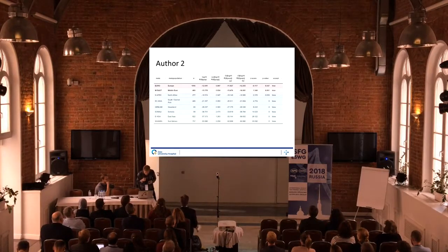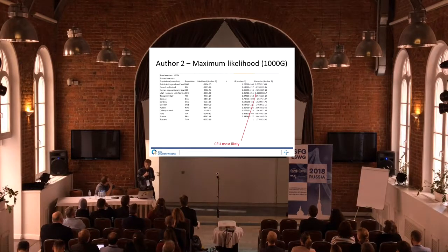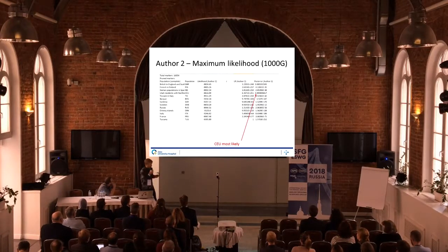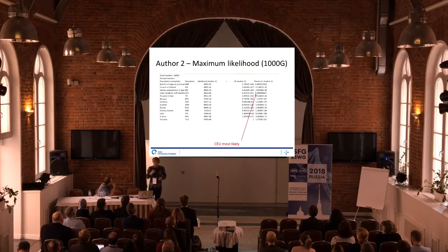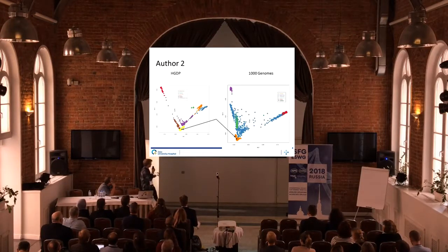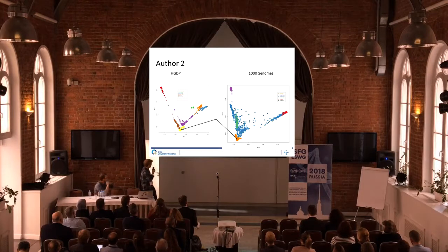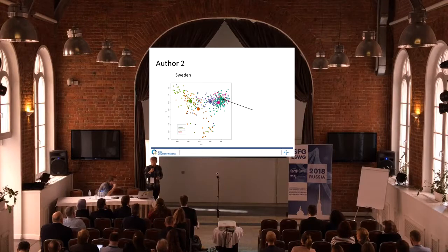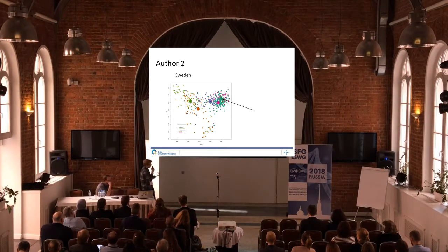It's surprising that when we compare the second author with the 1000 Genomes and other populations using 60,000 markers, we get a high probability predicted for the Northern Western European population instead of specifically the Swedes. We see that the second author is clustering nicely within the European cluster, and if we plot the second author in Sweden we see that he is in the middle of the southern Sweden region.